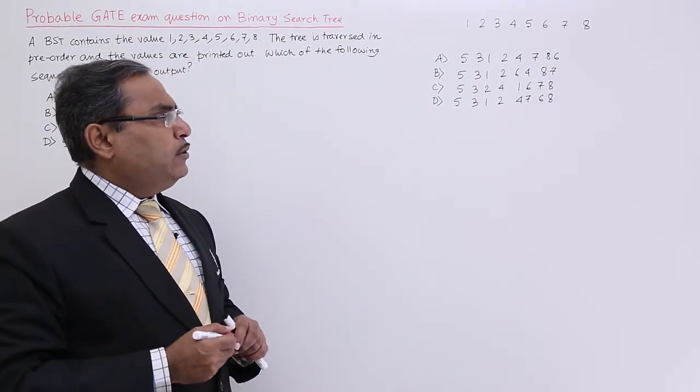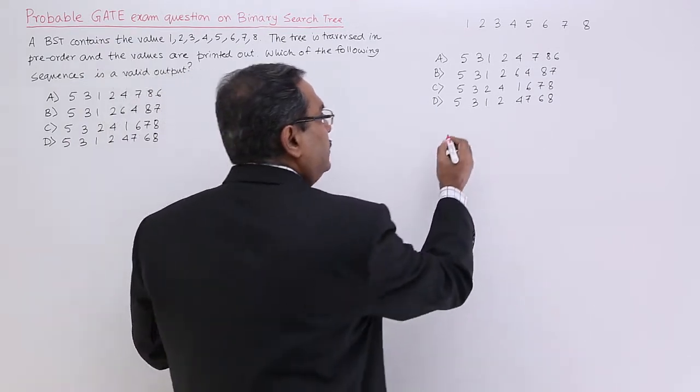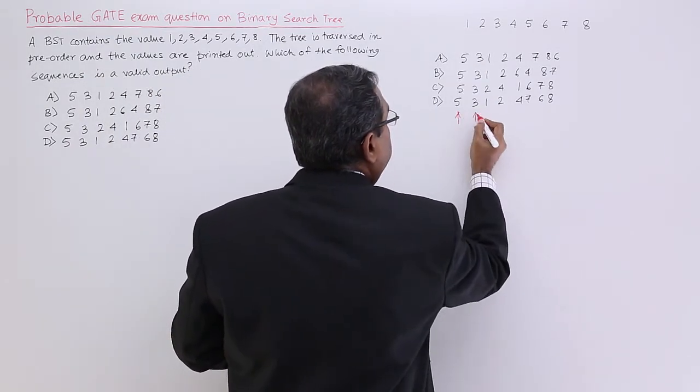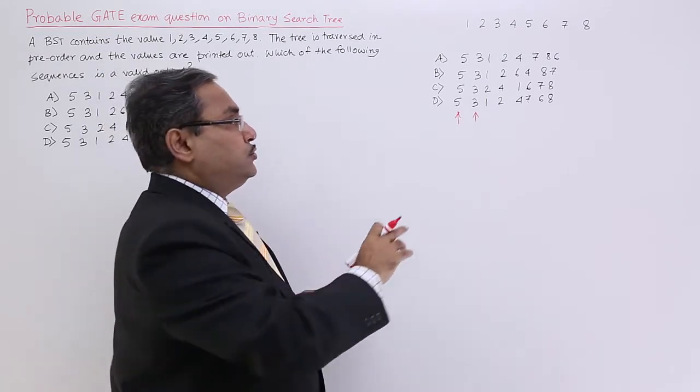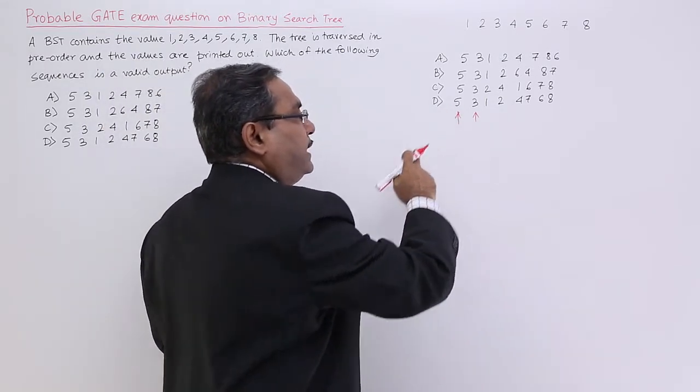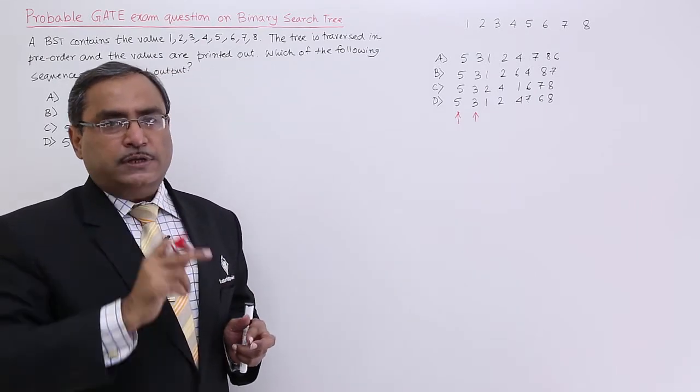We can analyze the pre-order traversals. See, I am getting one parity. Parity here is that first is 5 and the second one is 3 for all the options. So that is a key for me. As the first node is 5, that means 5 is the root node.